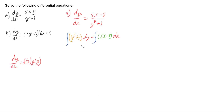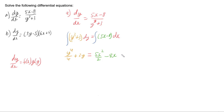Integrating both sides: y cubed integrates to y to the 4 divided by 4, and 3 integrates to 3y. That equals the integral of 5x, which is 5x squared over 2, minus 8x, and of course we include a plus c.